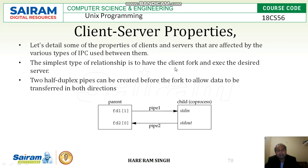The client will create a server using the fork function and it will execute it using the exec function. For that, two half-duplex pipes can be created before the fork to allow data to be transferred in both directions.